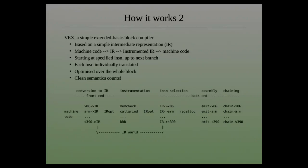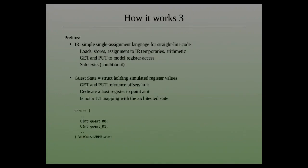I'd like to show you a running example to illustrate a couple of problems. The intermediate representation — you might have seen it in my talk earlier this morning — is basically a very simple single assignment language. We have IR temporaries which can only be assigned once. You can write loads of code in the language. We have a pair of special instructions used to model guest register accesses, and we can make a conditional exit for the block.